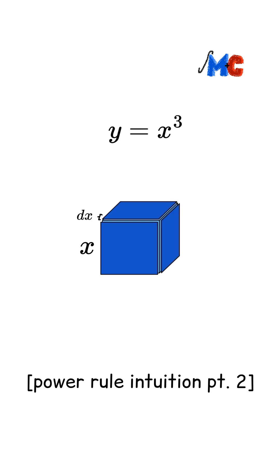This essentially has the effect of tacking an infinitely skinny rectangular prism onto each side of the cube. And the change in volume to our cube, dy, is equal to the total volumes of our dark blue rectangular prisms.